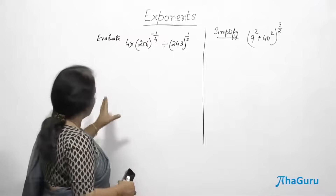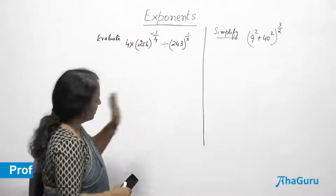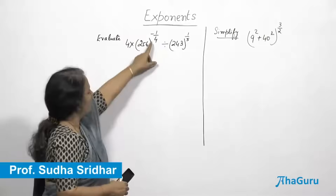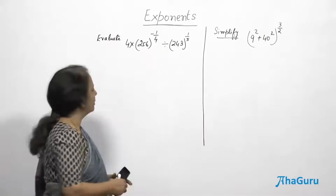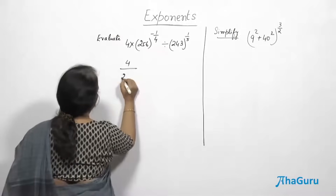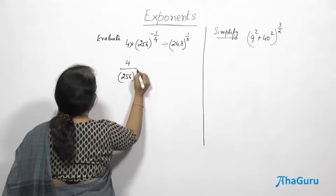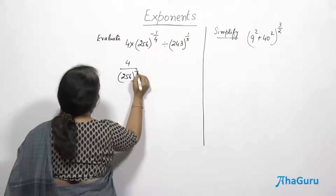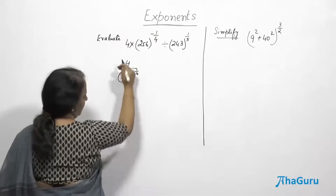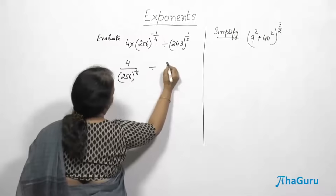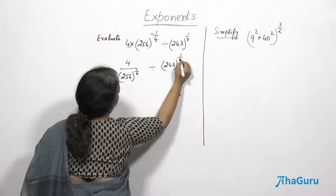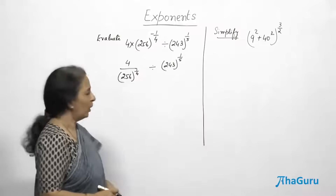Let us do this problem — it says simplify. The power is negative, so we'll first make it positive: 4 divided by 256 to the power 1/4, because the entire thing has come to the denominator, divided by 243 to the power 1/5. Now the power has become positive.